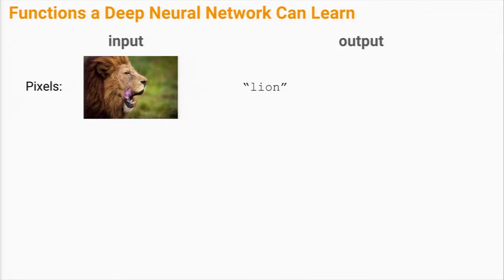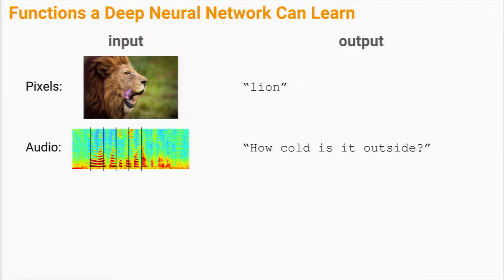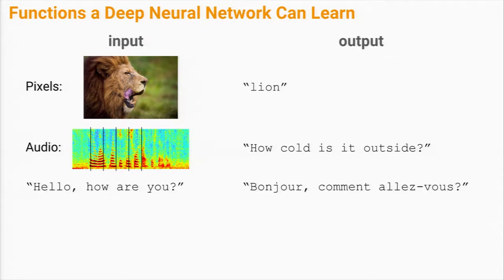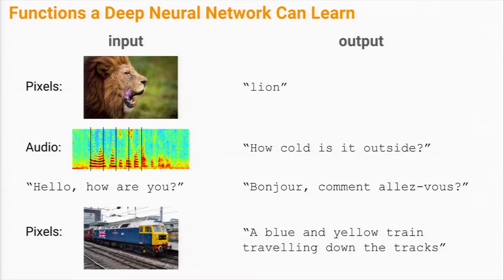You're not restricted to categorical predictions. These modern deep neural networks can not only take images as input — they can take audio and predict a sentence, take a sentence and predict another sentence perhaps in another language, or even take images and read out a caption-like description of the image.